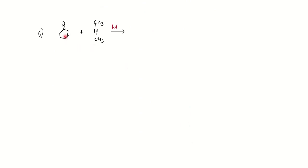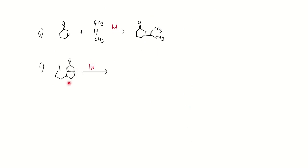Alpha-beta unsaturated compounds also react with alkynes (acetylene), and you can show the 2+2 cycloaddition reaction. In another example with an alpha-beta unsaturated ketone containing an internal double bond, you can show intramolecular 2+2 cycloaddition, and the product has four rings.